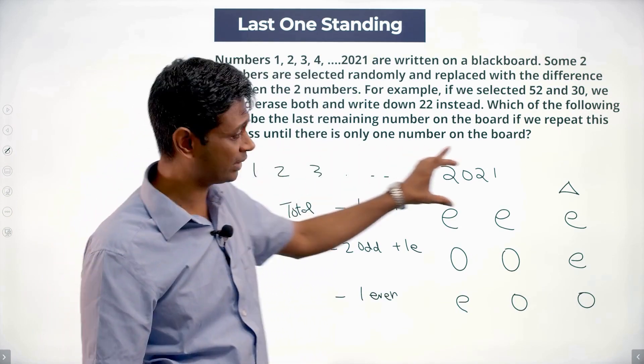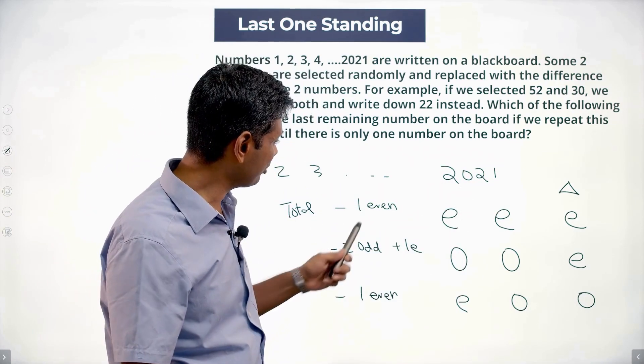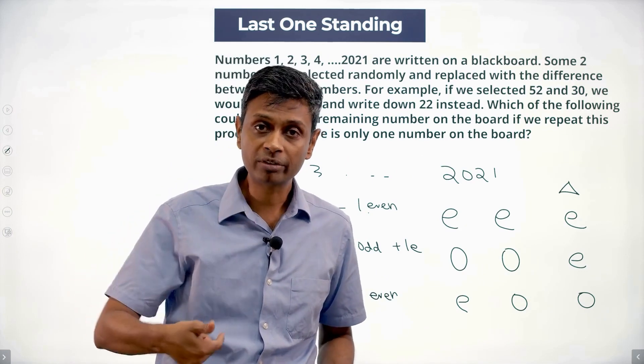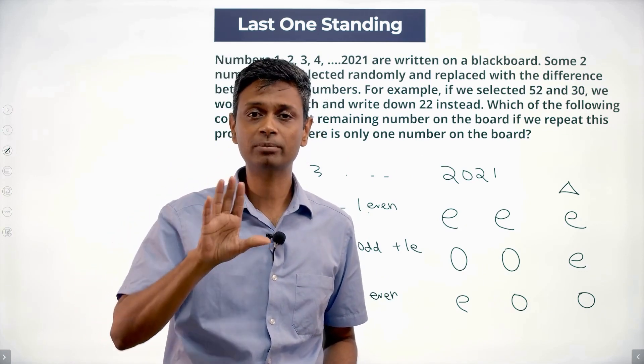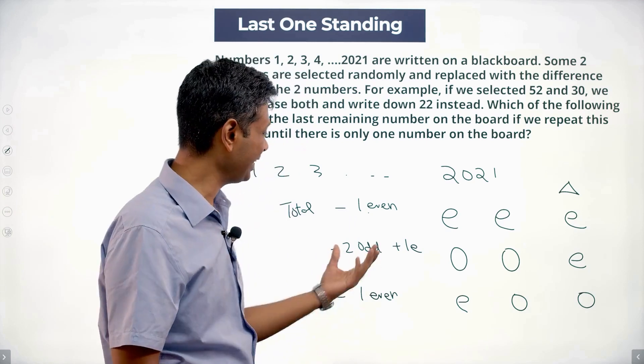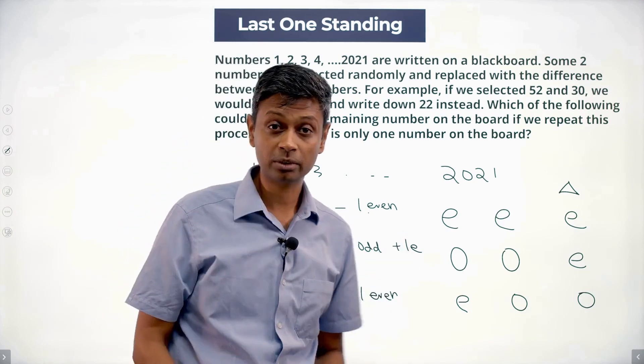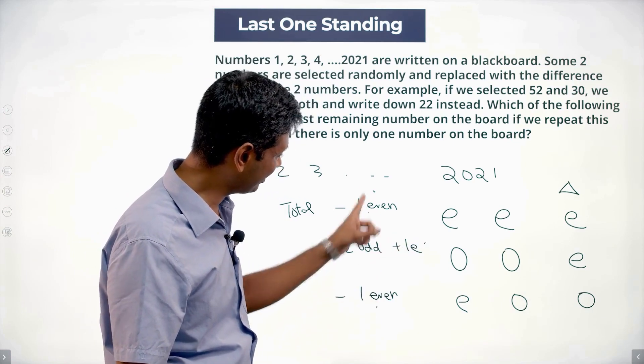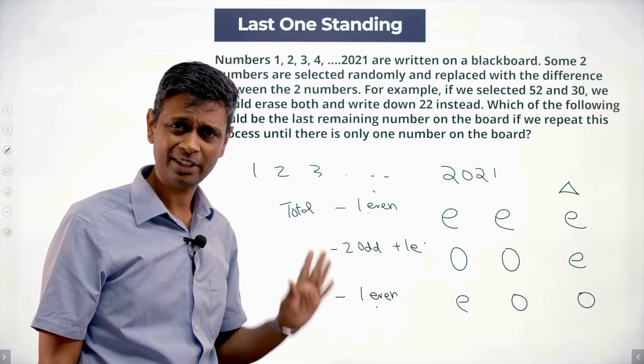So whatever number of numbers I have, I'll either subtract one even number or I'll subtract two odd numbers and replace it with one even number. I'm taking away two odd numbers and adding one even number. The beauty here, even numbers are appearing in every transaction. Steps of one.